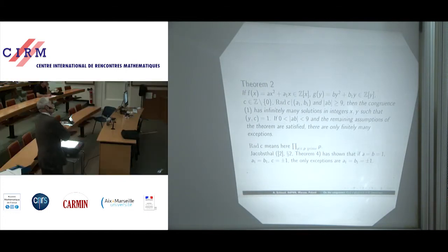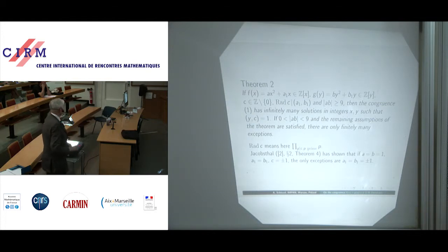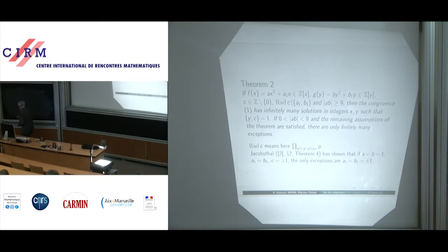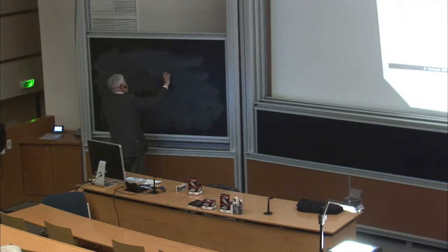Theorem 2: if FX is AX squared plus A1 X and GY is BY squared plus B1 Y, polynomials with integral coefficients, and C is a non-zero integer, and radical C divides A1 and B1, and AB is in absolute value greater than or equal to 9, then the congruence 1 — which is the congruence FX plus GY plus C congruent to 0 mod XY — has conditions described next.